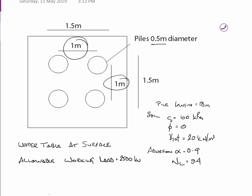The water table is at the surface and the allowable working load of these piles is 2,500 kN. Pile lengths are 18m, uniform soil conditions. CU undrained cohesion is 100 kPa, phi is 0, and gamma sat is 20 kN per cubic meter. The adhesion factor alpha is 0.9 and NC is given at 9.4.